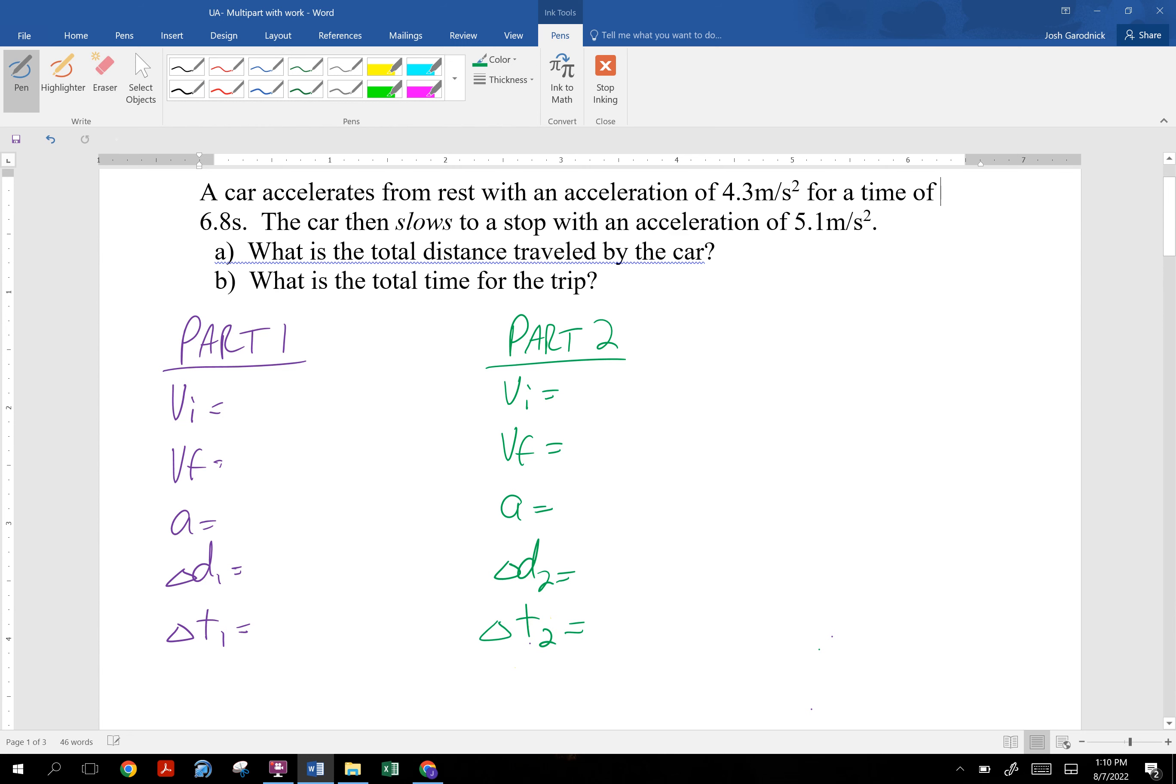Speaking of filling what we know, let's attempt that. We know that the car starts from rest in part one, so I'm going to write zero meters per second, accelerates at 4.3 meters per second squared for 6.8 seconds. For part one, it said starts from rest. Don't miss these key words.